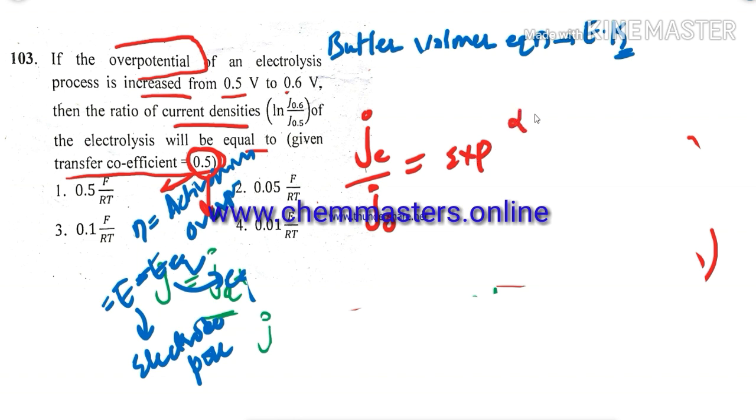So here alpha Z into F by RT into eta. So whenever we take ln J by J0, which equals to alpha Z F by RT into eta.